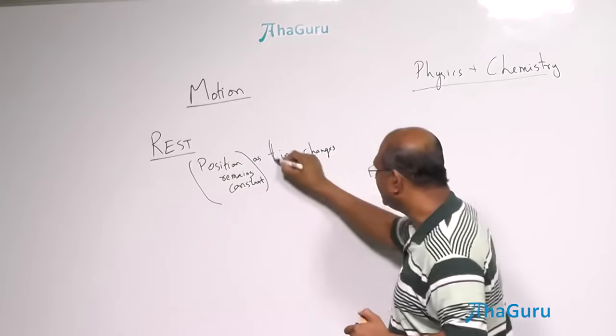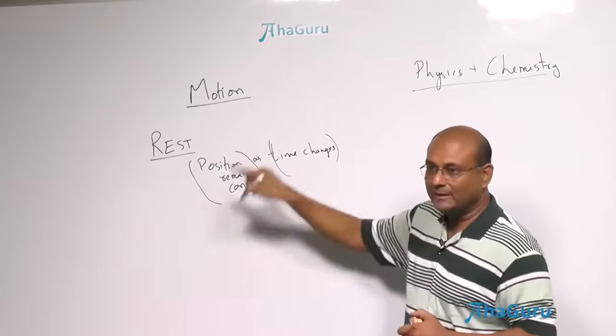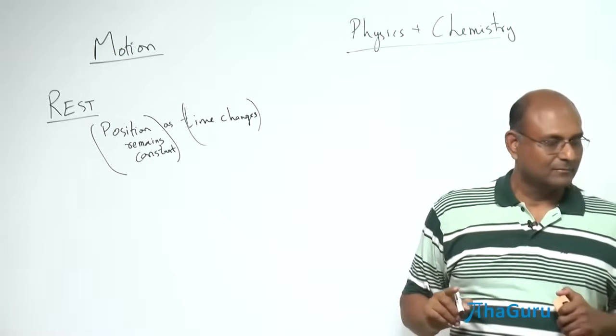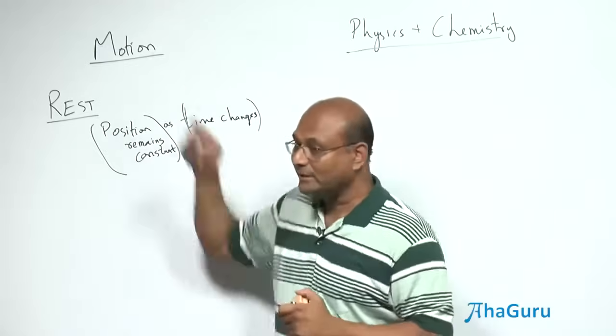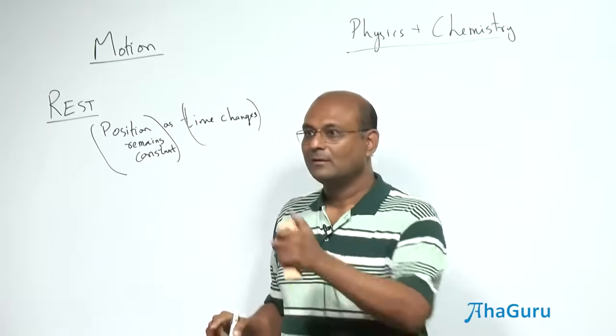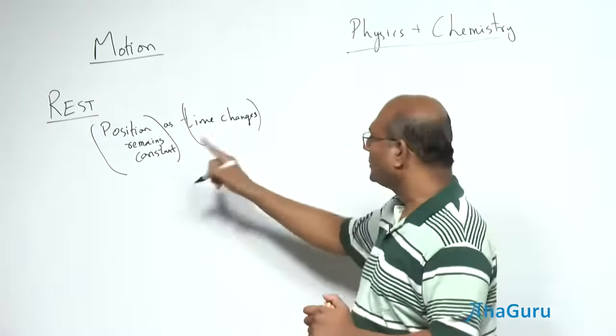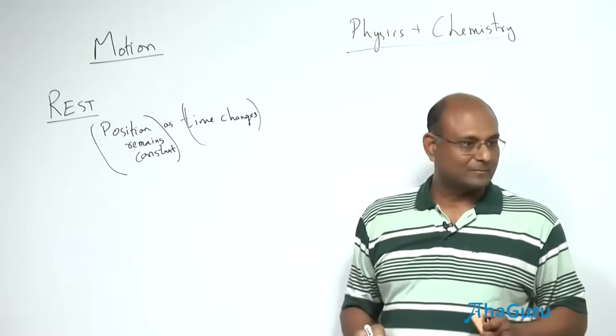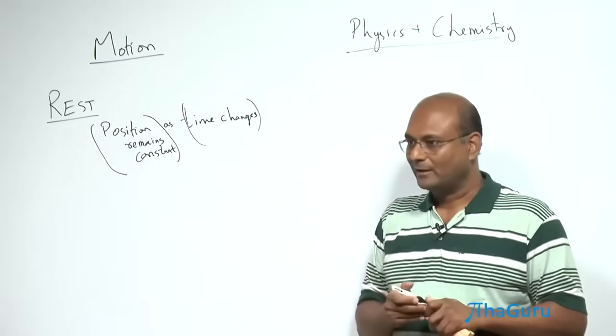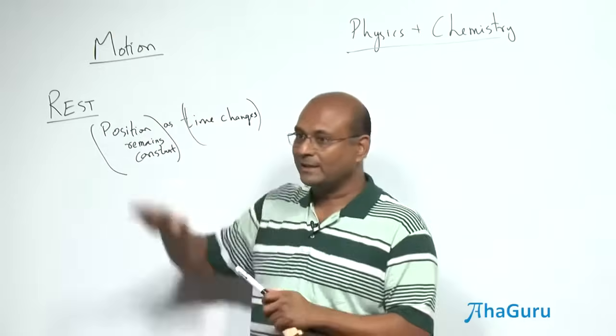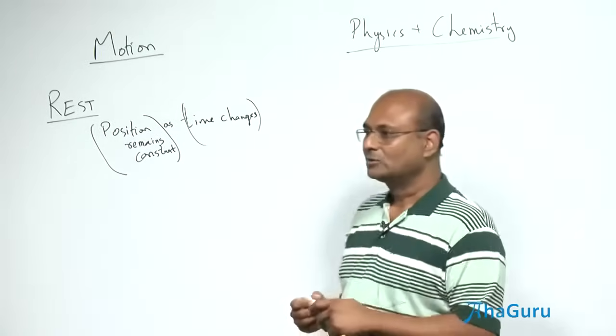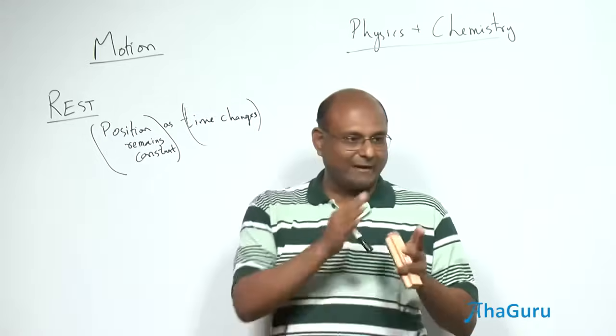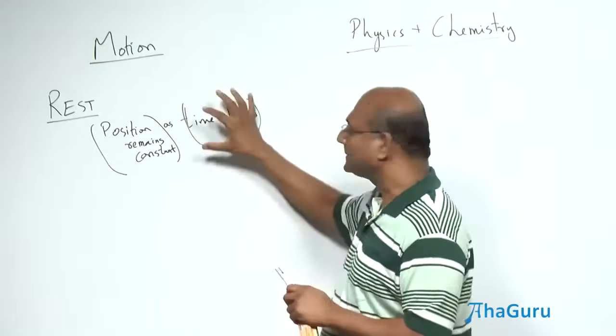So this is one part, this is the second part. Position remains the same as time changes. What is that? That is rest. So then what is motion? Position changes as time changes. Perfect. So position changes as time changes. Now this point is that time always changes. You don't have to do very much for it. Whether the object is at rest or in motion, time is anyway progressing, changing. So you have one second, after that you have one more second and then slowly time changes, right? After one o'clock comes two o'clock. So this we don't have to worry much.